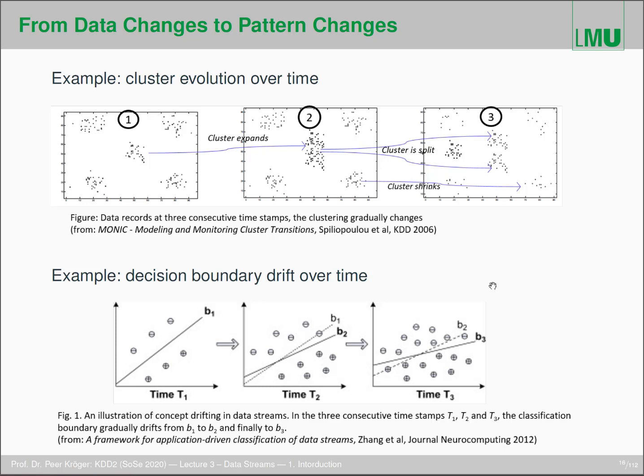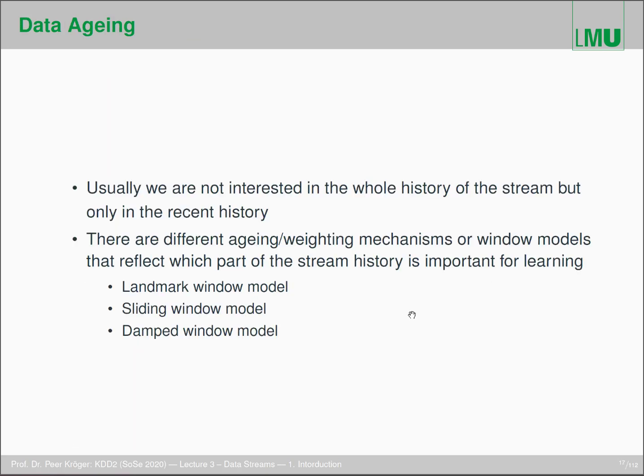If we talk about evolving patterns, we also talk about data aging because we are typically not interested in the whole history of the data stream, but only in the recent history. Typically, data that came in just recently is more important than data that came in a year ago or something like that. There are different aging mechanisms or weighting mechanisms. You weight your data so that the data that is most current should be weighted higher than the data that is older. There are different mechanisms and also so-called window models that reflect which part of the stream history is important for learning. We typically have those three models here: the landmark model, the sliding window model, and damped window model.